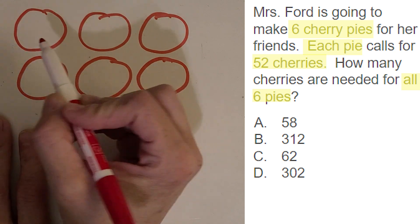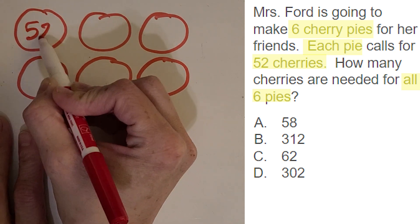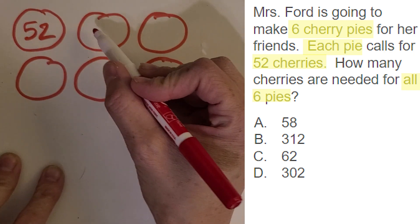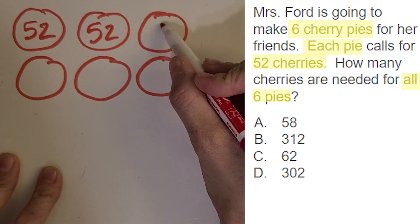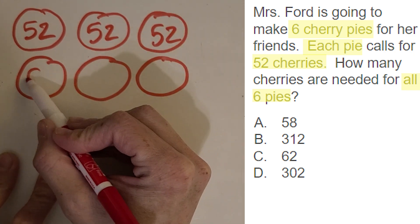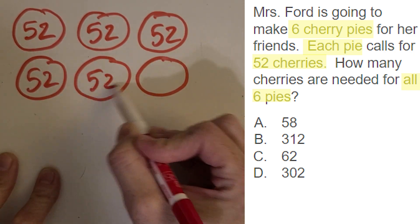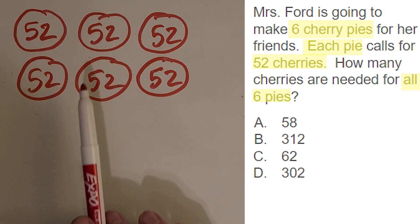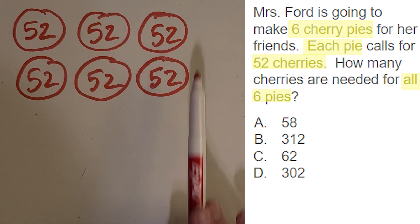So I have my six pies drawn. They each need 52 cherries. Of course, I wouldn't want to draw all 52 cherries. That would take me forever. So I just sometimes I just jot down the number. And that can help me also visualize what type of problem is this? So what am I going to do? If you see six groups of 52, then what problem does that make you think of?